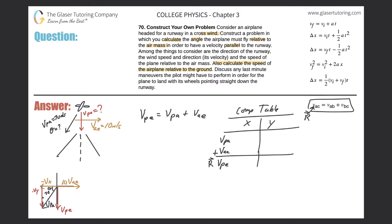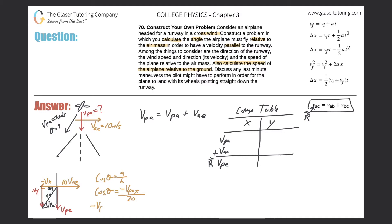The hypotenuse is V_PA = 70 meters per second. For the x component, I'm looking for the side adjacent to theta, so I use cosine: cosine(theta) = adjacent / hypotenuse, giving negative V_PAx = 70·cos(theta). Distributing the negative, I plug in: negative 70·cos(theta) for the x component.